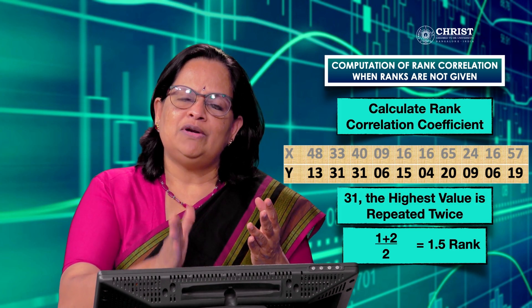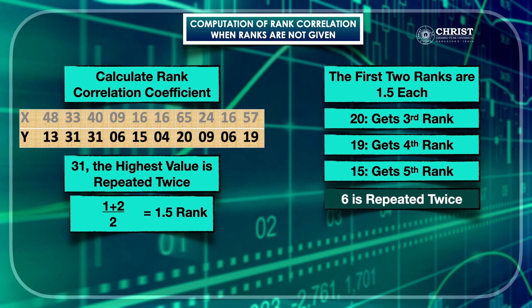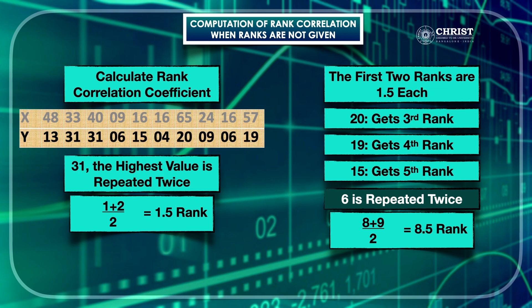For y series: 31 is the highest value, repeated twice — the ranks would have been 1 and 2, so (1 + 2) / 2 = 1.5. Both 31 values get rank 1.5. Then 20 gets the third rank (not second, since first and second are already assigned as 1.5). 19 gets fourth rank, 15 gets fifth rank. Now 6 is repeated twice — the ranks are (8 + 9) / 2 = 8.5. The last value 4 gets the 10th rank.